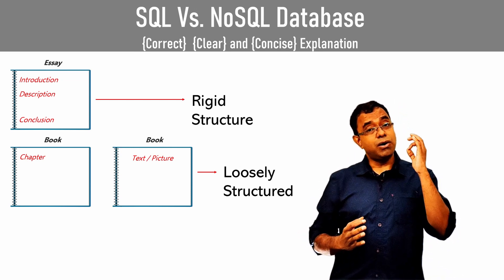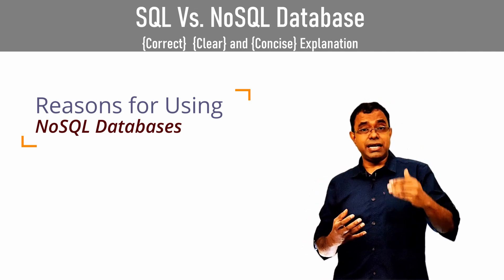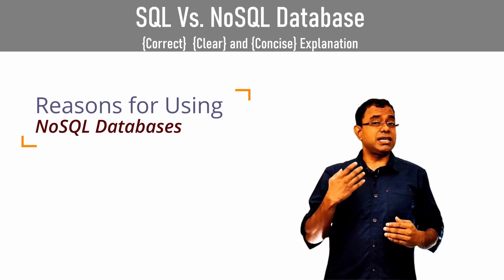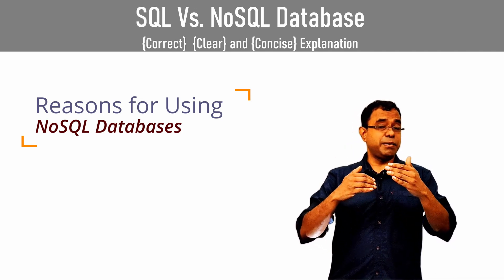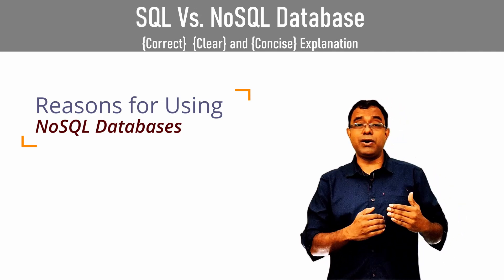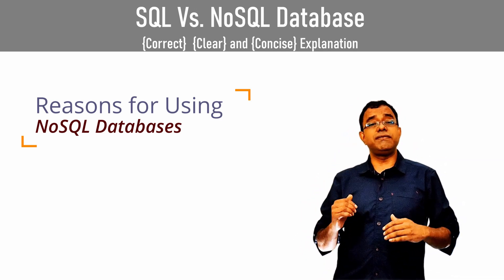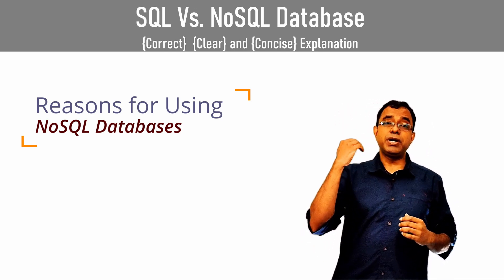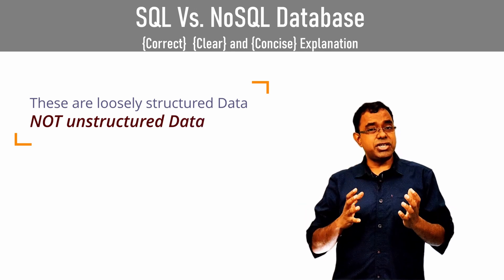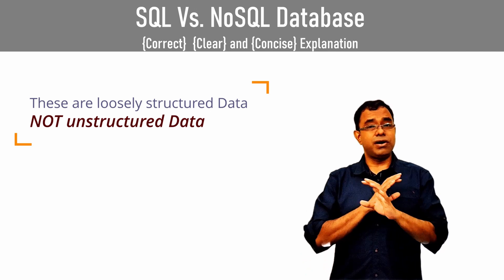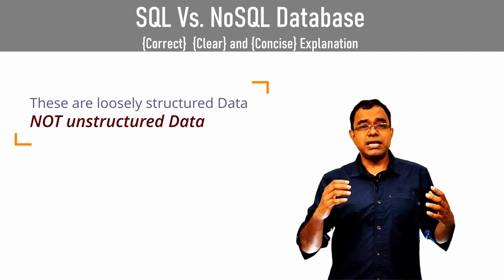Think about the reason for using NoSQL. Even if you are storing social media comments or a blog post, there will be some loosely coupled structure associated with it — like date and time, text. Some text will be smaller, some bigger, some will have a link, but date and time will be common. And it will be part of a particular topic. If you are putting a social media post, all the comments will be related to that particular topic — people are commenting against something you posted. So these are called loosely structured data, not totally unstructured or unrelated data.